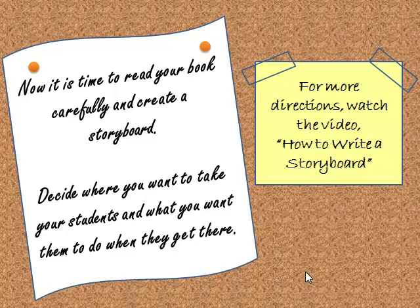Now it's time to read your book carefully and create a storyboard. Decide where you want to take your students and what you want them to do when you get there. Each book will dictate a course of action you will want to follow. Are you going on an international trip, looking at rainforests, or just sticking close to home? What will your students do when they visit each of the placemarks you create — will they answer comprehension check questions, examine geographical features, or look at famous landmarks? All of this is up to you. For more information about writing a storyboard, view the video called How to Write a Storyboard, where I show you the process I went through to create a storyboard for a book about Johnny Appleseed.